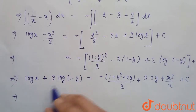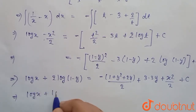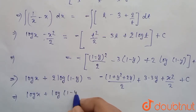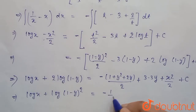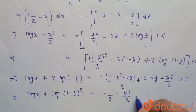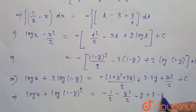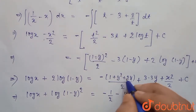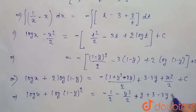Using the log power property, 2 log(1 - y) becomes log(1 - y)². The right side simplifies: -1/2 - y²/2 - 2y/2 - 3y becomes -1/2 - y²/2 + y (correcting the sign), plus x²/2 + c.